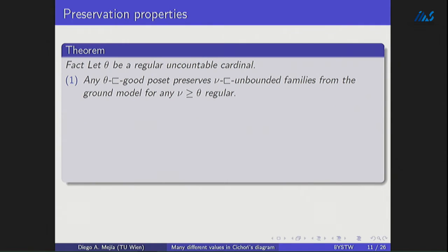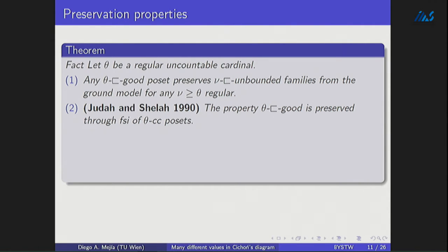Whatever this property is, it always preserves θ-unbounded families of this type. If you have a θ-good forcing, it will always preserve θ-unbounded families from the ground model, whenever ν is a regular cardinal above θ. The key fact here — from Judah and Shelah, generalized here with the same proof — is that this property of being θ-good is preserved through finite support iterations that are θ-c.c. In particular, through CCC forcings, which is what I will use in the applications. So this property is good as it is preserved through finite support iterations.